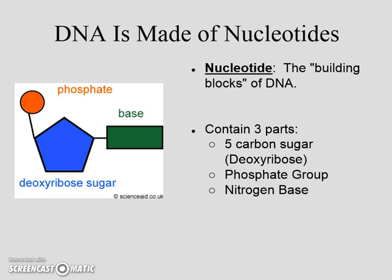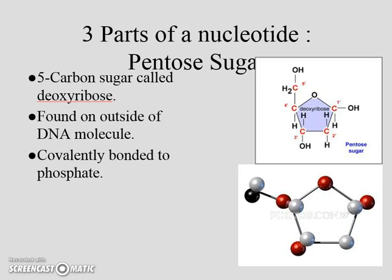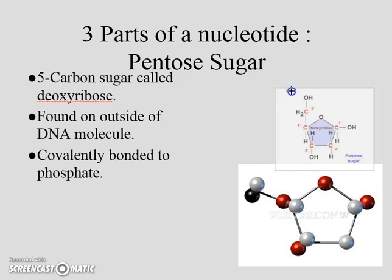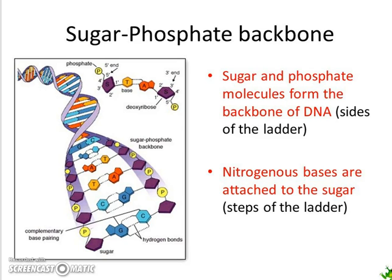There are four different bases we're going to talk about that make each nucleotide different. Every nucleotide has a phosphate and a sugar, but the base is what makes it different — so technically there are four nucleotides. The phosphate group looks like a circle with a phosphate in the middle and four oxygens bonded around it, covalently bonded together. The next is the pentose sugar, also referred to as deoxyribose sugar — a five-sided shape with carbons, hydrogens, and oxygens. It's on the outside of the ladder along with the phosphate, so we call it the sugar-phosphate backbone. They form the sides of the ladder, or the DNA helix. In the middle are the bases — A's, T's, C's, and G's.